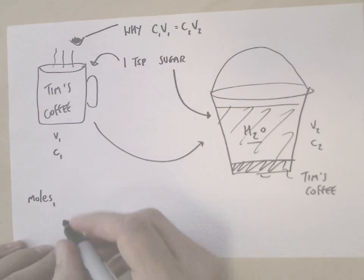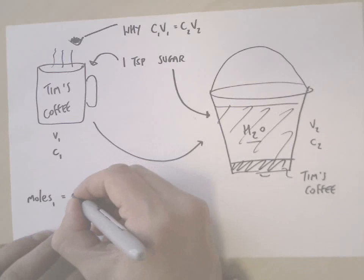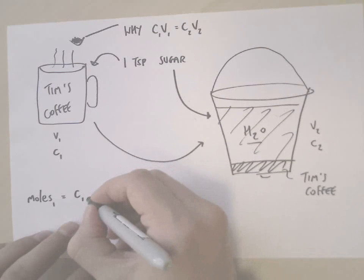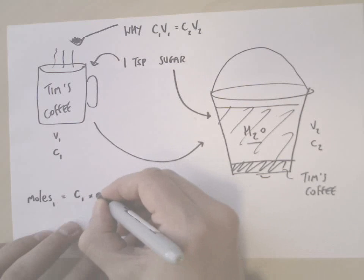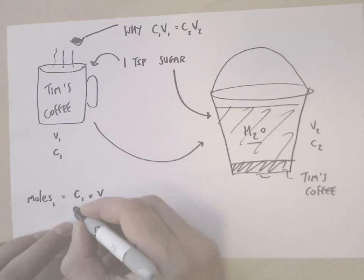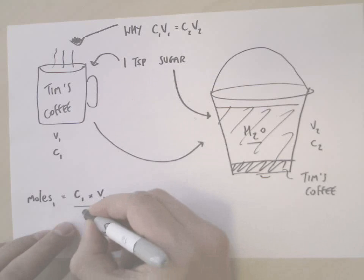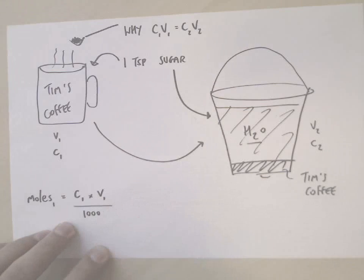So the moles at position one is equal to the concentration multiplied by the volume, and then you can divide by a thousand depending on what units you're using for volume.